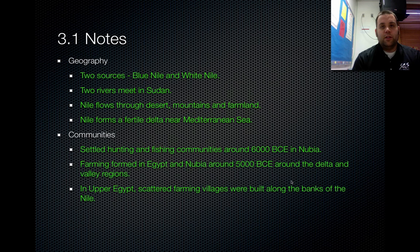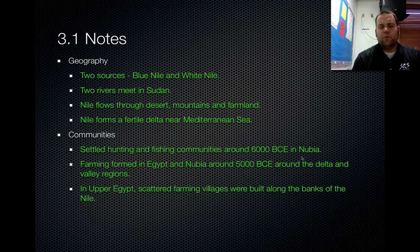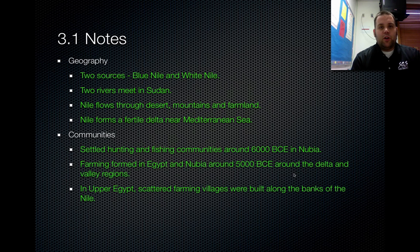The second grouping is Communities — the communities that grew up along the Nile. Some of the first communities, around 6,000 BCE, so over 8,000 years ago, developed in what we call Nubia. They were basically hunting and fishing communities. Farming started in Egypt and Nubia around 5,000 BCE in that delta region with its beautiful, rich farm soil. Upper Egypt had scattered farming villages built along the banks of the Nile.